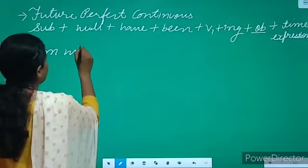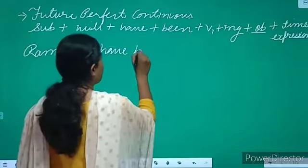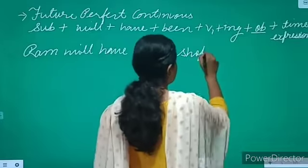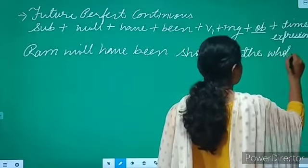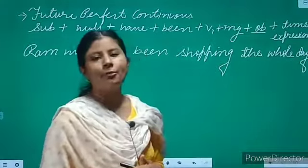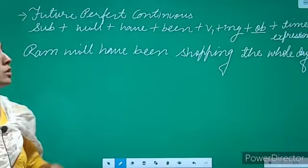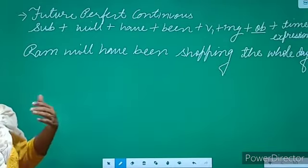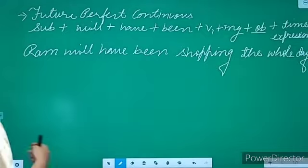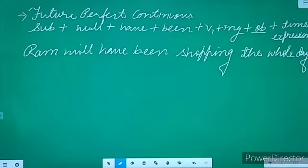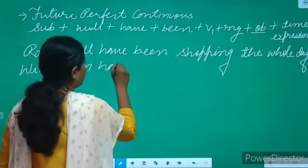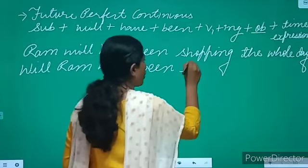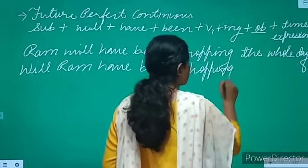Let me give you an example. The affirmative sentence is: 'Ram will have been shopping the whole day.' So this is in the future tense — Ram will be shopping in the future time. To change it into interrogative, you say: 'Will Ram have been shopping the whole day?'